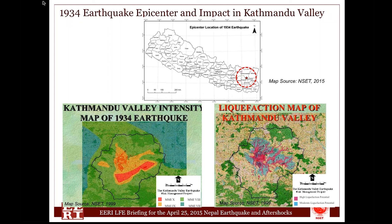There were several cases of liquefaction in Kathmandu Valley during 1934. In the present day, Kathmandu Valley also has very high liquefaction potential, largely near river areas.